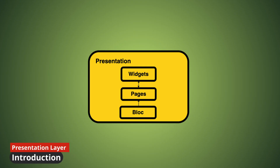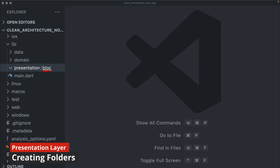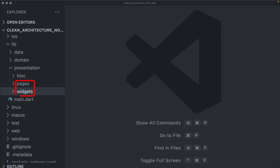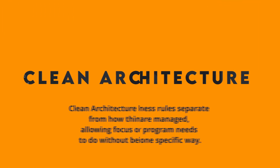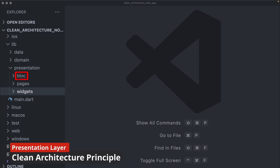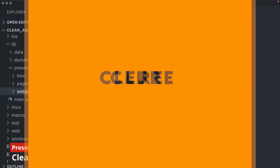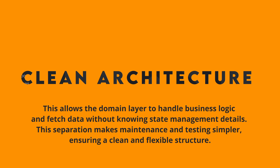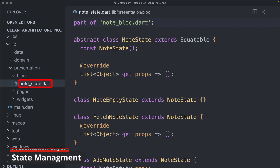We now shift focus to the presentation layer, which deals primarily with the user interface. We create the presentation folder and categorize it into bloc, pages, and widgets subfolders. Clean architecture dictates that the domain layer should remain free from UI frameworks and state management libraries — blocks and state management live in the presentation layer. This way the domain layer can execute business logic without knowing about state management, simplifying maintenance and testing and ensuring a clean, flexible structure.